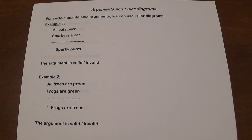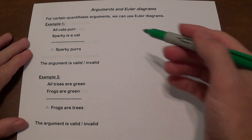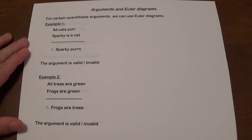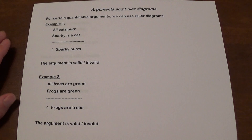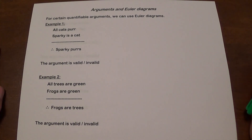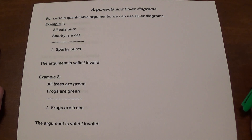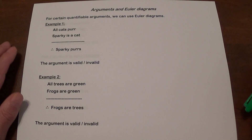We are going to talk about how you can determine the validity of arguments by using Euler diagrams. It's pronounced 'Euler.' For quantifiable arguments that have 'all,' 'none,' or 'some,' you can use Euler diagrams — it's actually going to work faster. Let's take a look at example one: all cats purr, Sparky is a cat, therefore Sparky purrs. This does make sense, but we need to verify it.